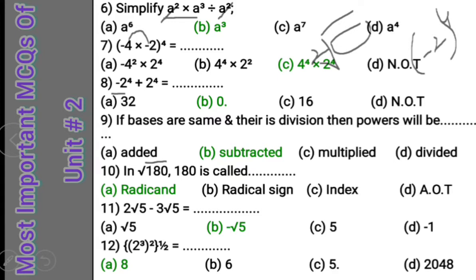Question 11: 2 square root 5 minus 3 square root 5 is equal to what? Take square root 5 common: the coefficients are 2 and minus 3, giving minus 1. So the answer is minus 1 square root 5, or simply minus square root 5. The simplified answer is minus square root 5.